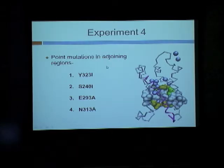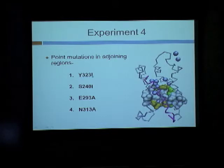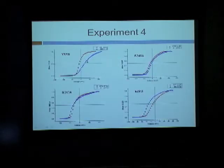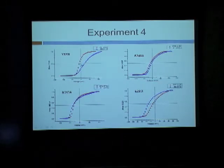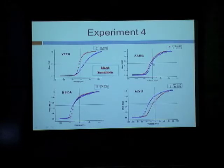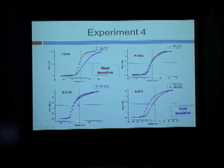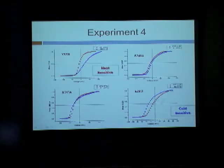In Experiment 4, we performed point mutations in regions adjoining the S4 domain. The first two mutations are in S1 (top of the VSD) and the last two at the bottom of the VSD. Y323I shows that V_half at 28°C is less than at 8°C, so the process is more favorable at higher temperature — this mutation is heat-sensitive. S240A shows a shift at higher temperature but it is not very prominent. N313A shows no change in V_half between 8°C and 27°C. E293I shows a shift where at 8°C more channels are open at lower voltage — this mutation is cold-sensitive.